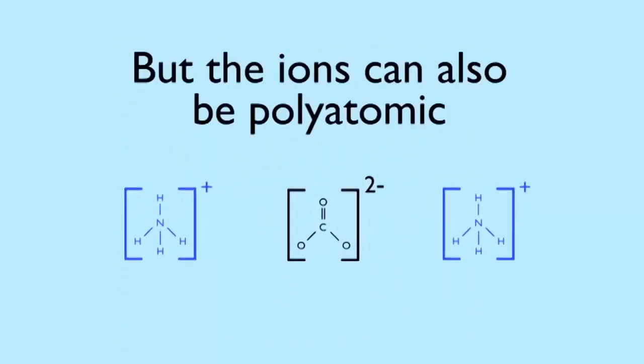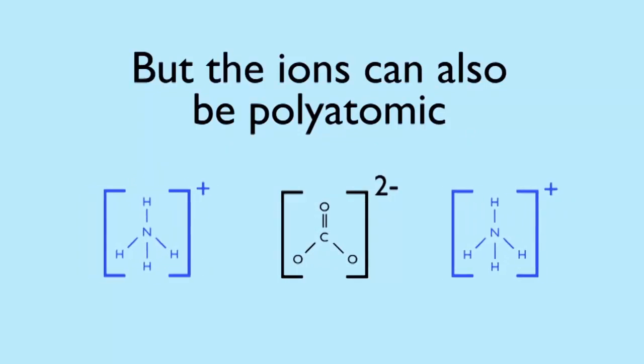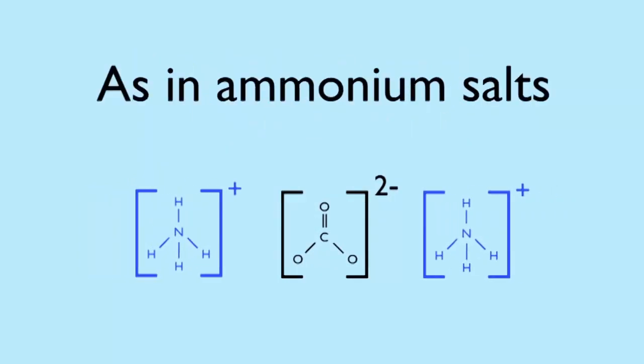The ions can be polyatomic - that is, made up of more than one atom. A common example of this would be ammonium salts.